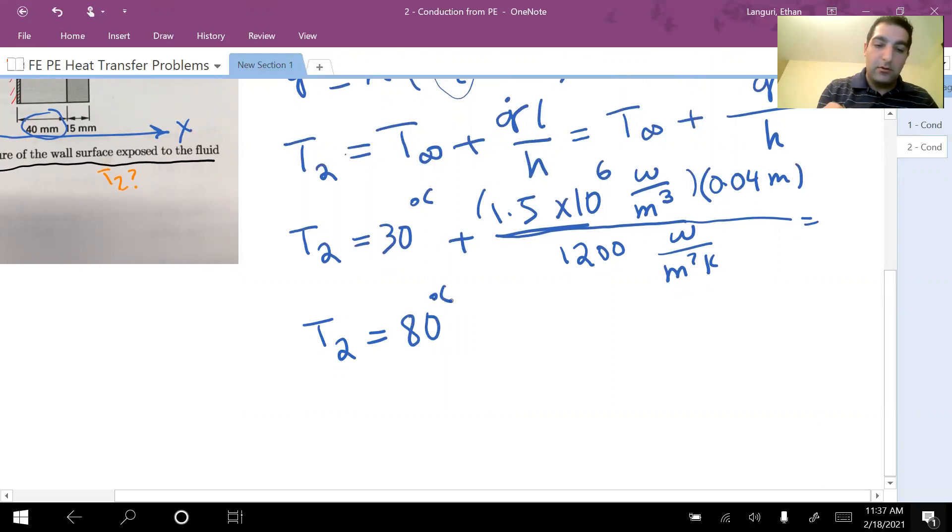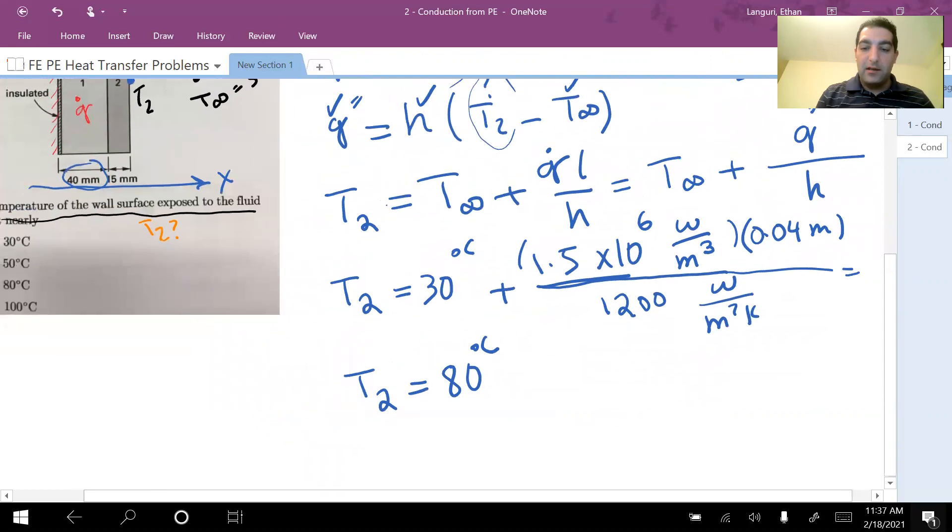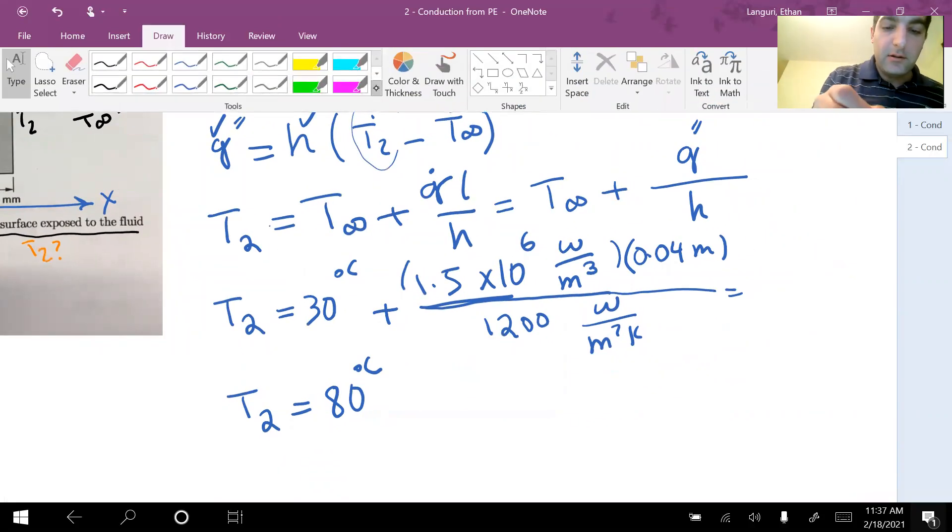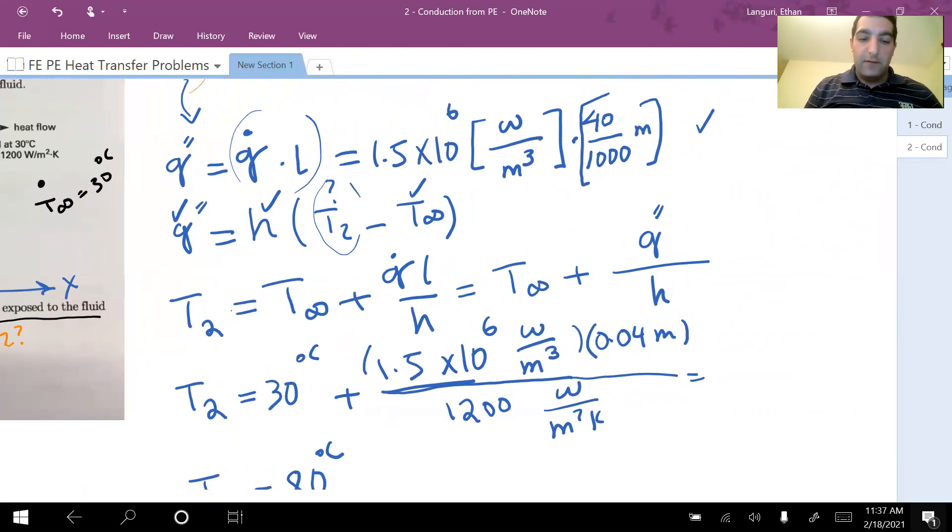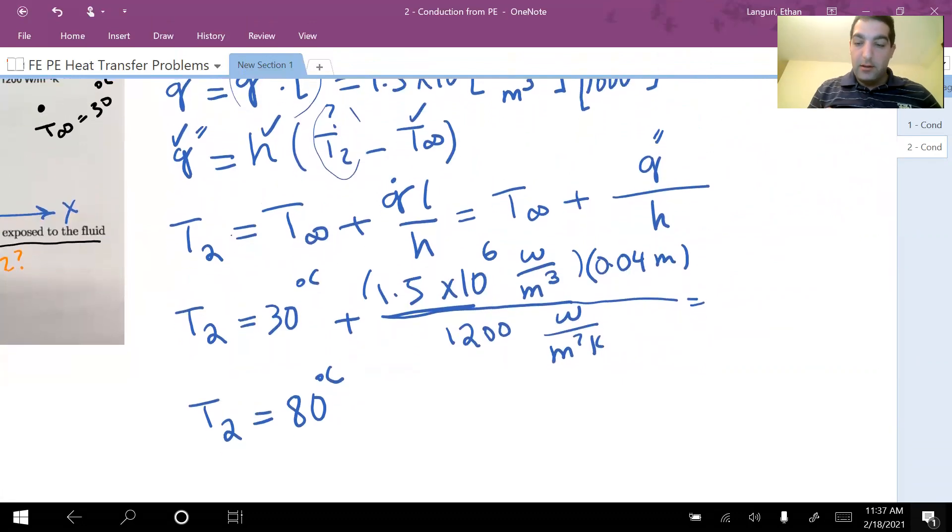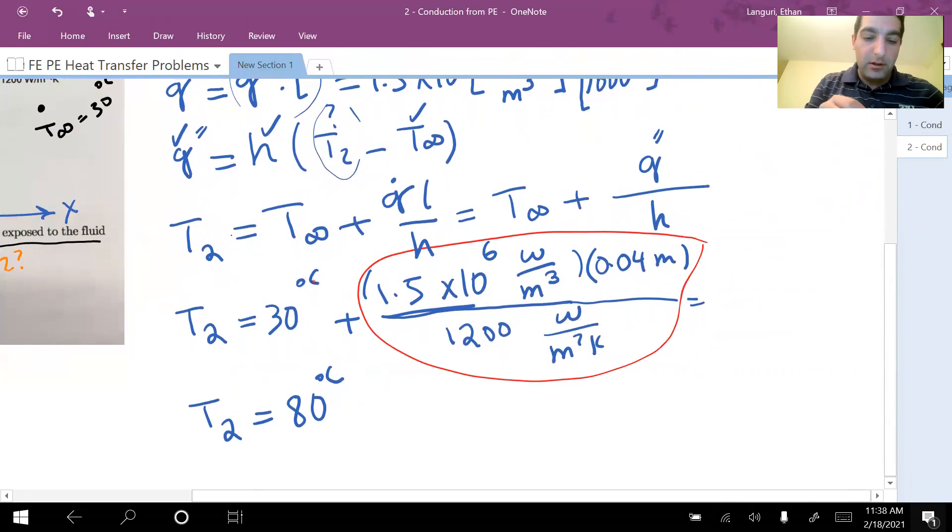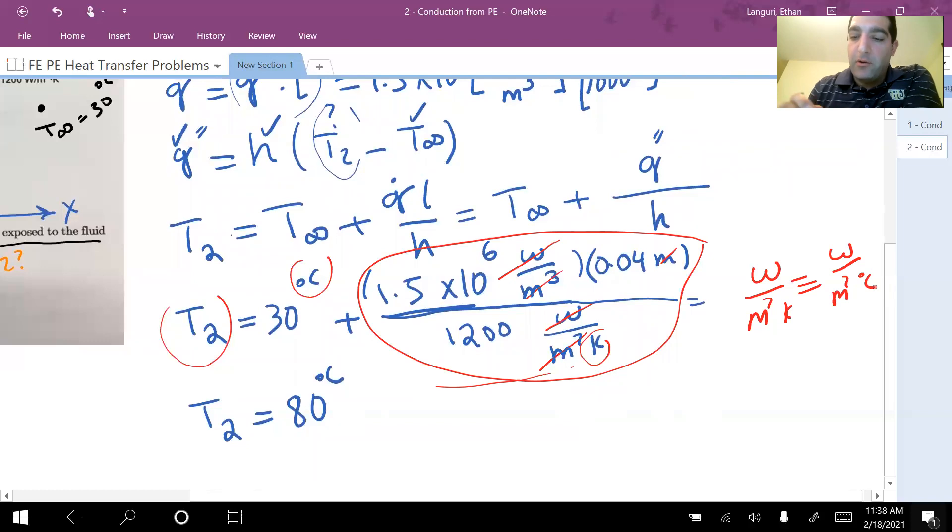You can always quickly double check your units if you have enough time. Let's look at this case, for example. The unit of this term should be the same as this term, which is the same as the left hand side term, which should be degree C. Let's see if we're getting degree C or not. Watt and watt cancel out each other. Meter and meter cubed makes meter square, which you can cancel out with this. And really at the end you have Kelvin, and since watt per meter square Kelvin is the same as watt per meter square C, our unit is exactly correct.